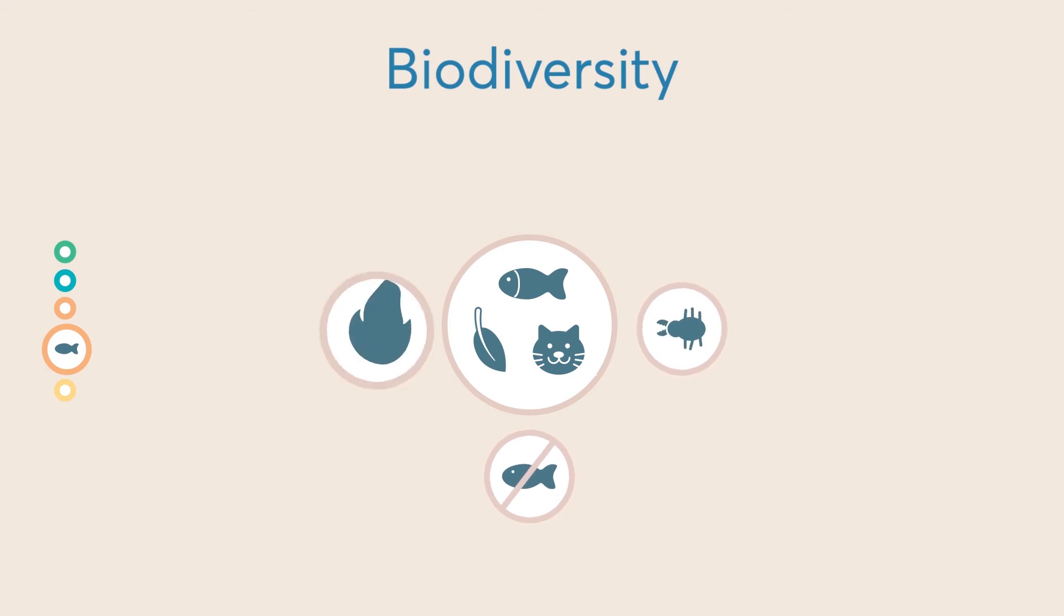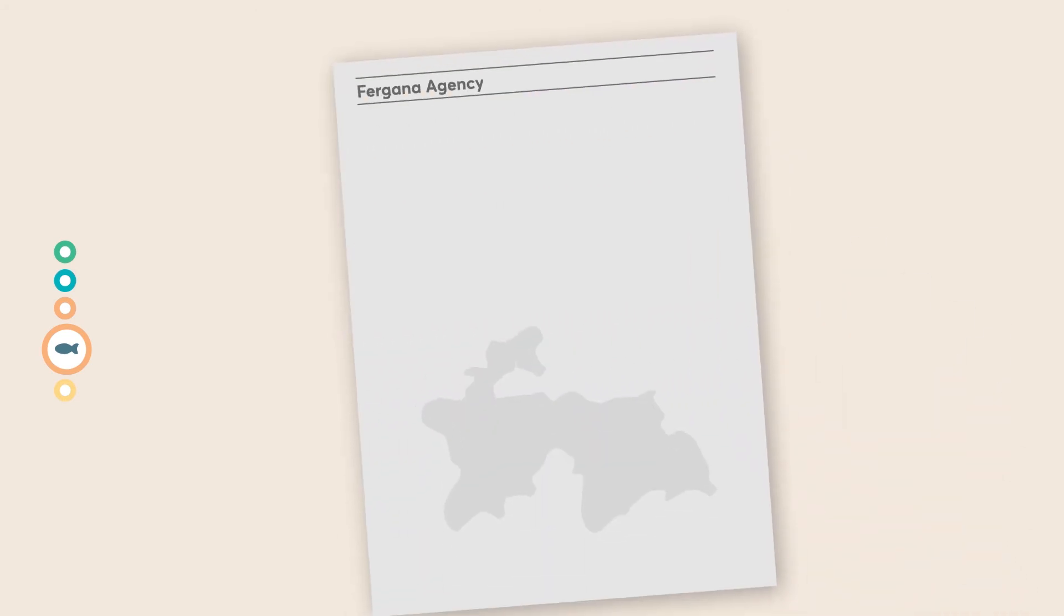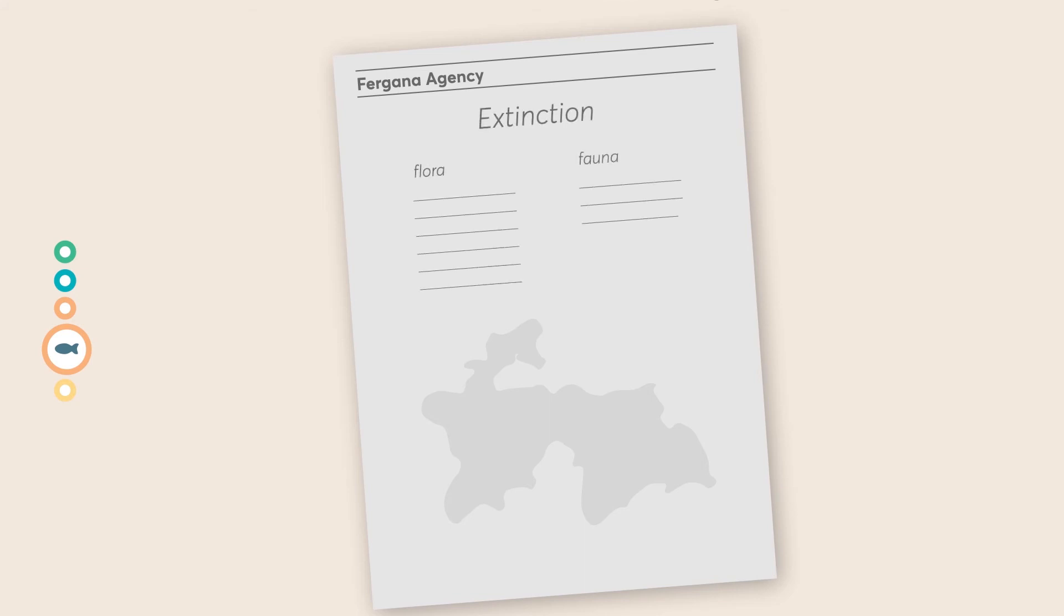Moreover, forest fires and deforestation are very likely to occur, which in turn contributes to escalating climate change. The Ghana Agency have published an article where ecologists predict extinction of hundreds of types of flora and fauna species in Tajikistan.